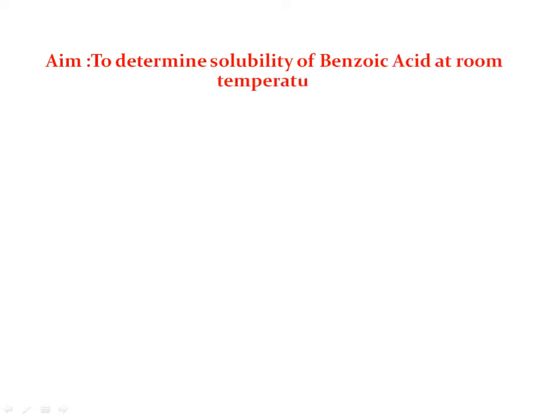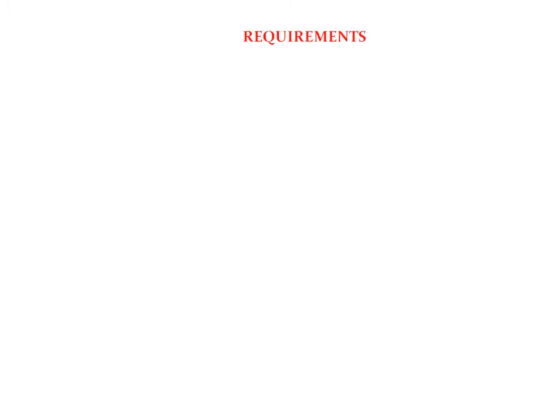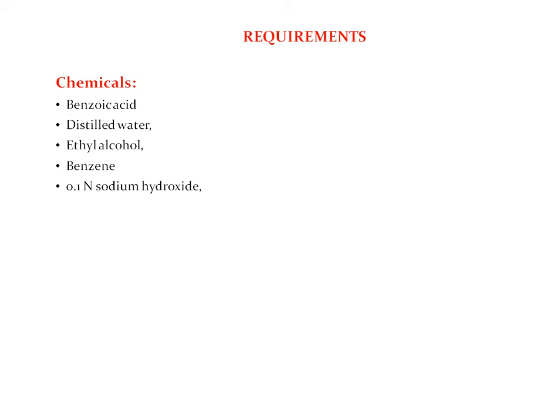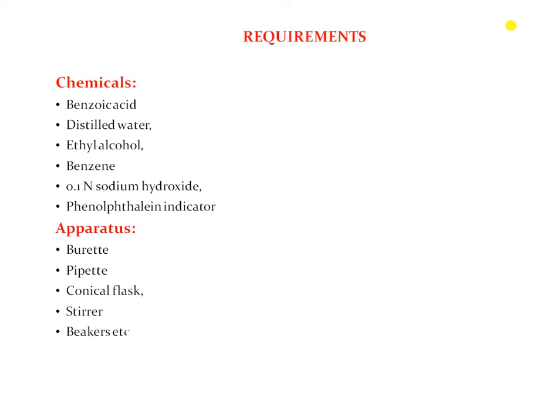Welcome dear students. Today we are going to determine the solubility of benzoic acid at room temperature in different solvents. Requirements for conducting this experiment: chemicals - benzoic acid, ethyl alcohol, and benzene. You require to prepare 0.1 normal sodium hydroxide and phenolphthalein as an indicator. Apparatus: burette, pipette, conical flask, stirrer, and beaker.